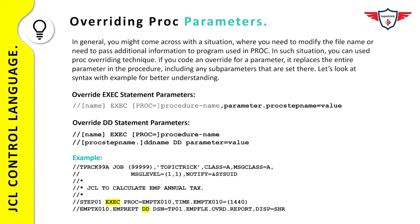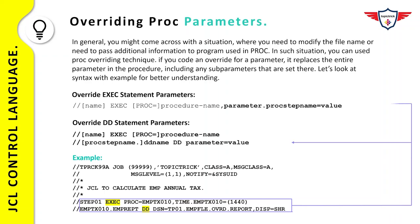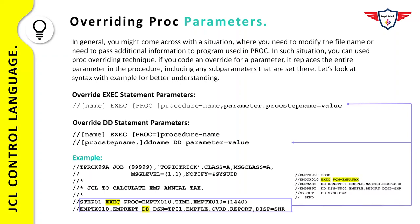Here is an example illustrating how to use the PROC overriding technique to override DD and EXECUTE statements. We are using the same catalog procedure from our previous example. The first two lines are the job card, followed by a comment section. STEP01 is an EXECUTE statement invoking the catalog procedure EMPTX010. On this step I'm adding a keyword parameter — the TIME parameter — to the PROC. Looking at the PROC on the right-hand side of the screen, there is no TIME parameter, so this is an additional parameter being added to the step EMPTX010.